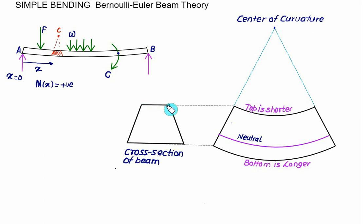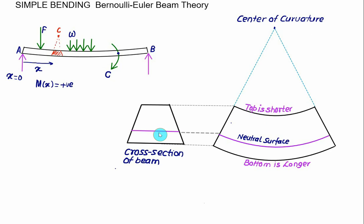The top fiber becomes shorter due to loading; the bottom fiber becomes longer. Somewhere we can identify a neutral fiber. Mathematically, it can be proved that the neutral surface passes exactly through the fiber which passes through the centroid of the given section. For a trapezoid, if C or G represents the centroid, then the horizontal line through the centroid is labeled the neutral axis — neutral because for that fiber there is no change in length.